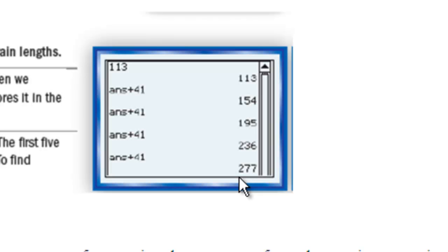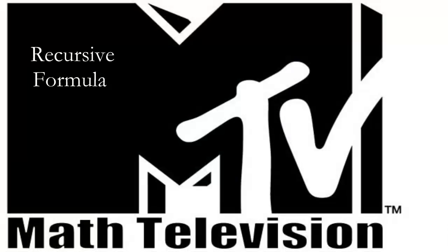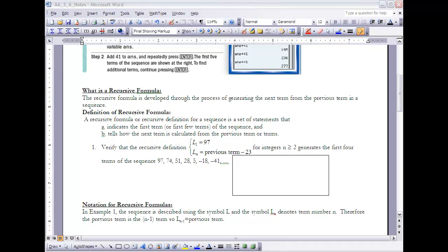So as I mentioned earlier, a recursive formula for a sequence is just that process of generating the next term of the sequence by using the previous term in the sequence. To define a recursive formula, then, a recursive formula or recursive definition—those terms are going to be used interchangeably—for a sequence is a set of statements that: